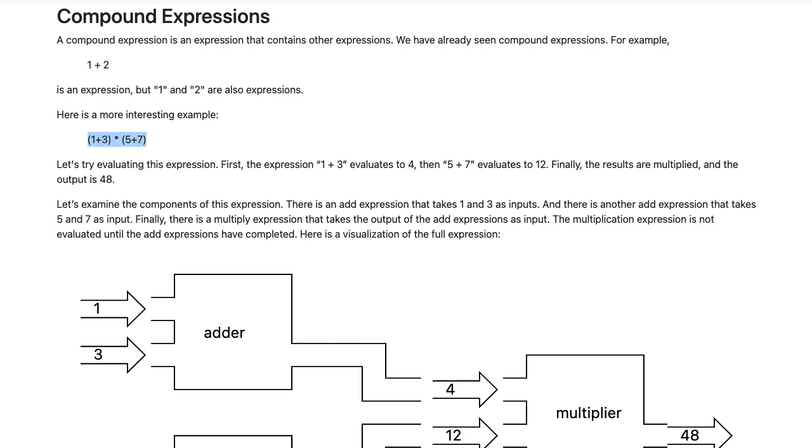(1+3)*(5+7). Let's try evaluating this expression. First, the expression 1 plus 3 evaluates to 4. Then 5 plus 7 evaluates to 12. Finally, the results are multiplied, and the output is 48.